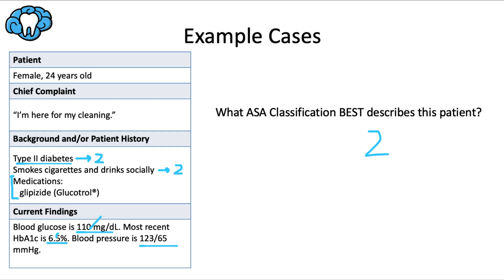You'll probably see ASA 2 and 3 most commonly, and might see a 4, and on a very rare occasion a 5. That's what you're looking for when analyzing a patient's medical history along with their vital signs, blood glucose, or HbA1c — and now you know what all those mean thanks to the last couple of videos.